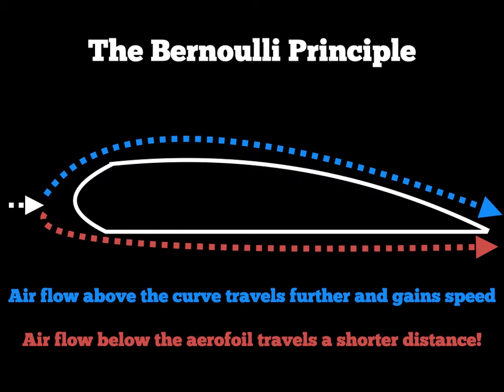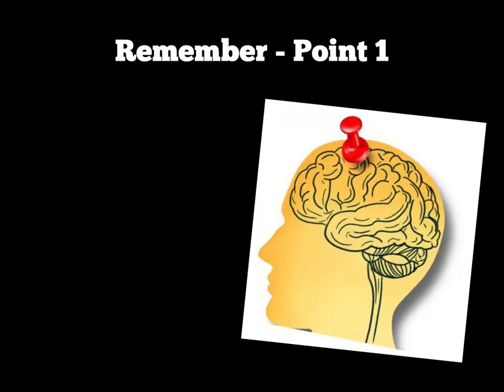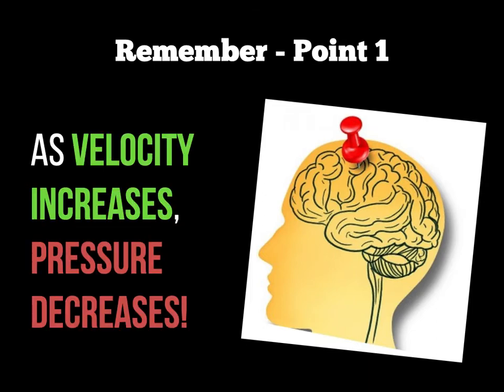That is technically how this works. Now in terms of how this generates lift, we need to think about pressure. The golden rule with regards to the Bernoulli principle is this: as velocity increases, pressure decreases. So anywhere where you've got high velocity, you're going to have low pressure. And if you have low velocity, you'll have high pressure — always remember it that way round.